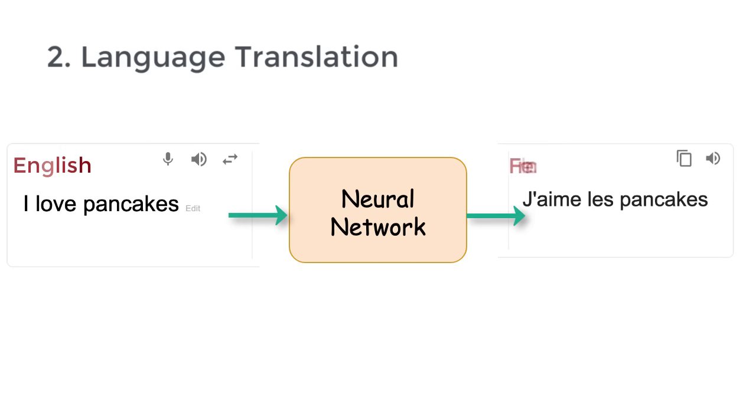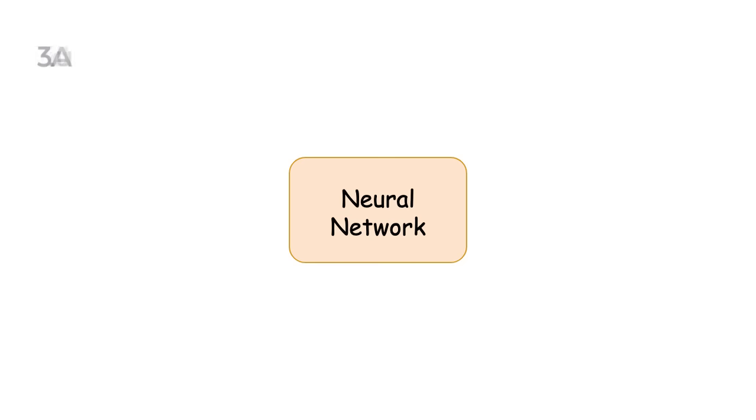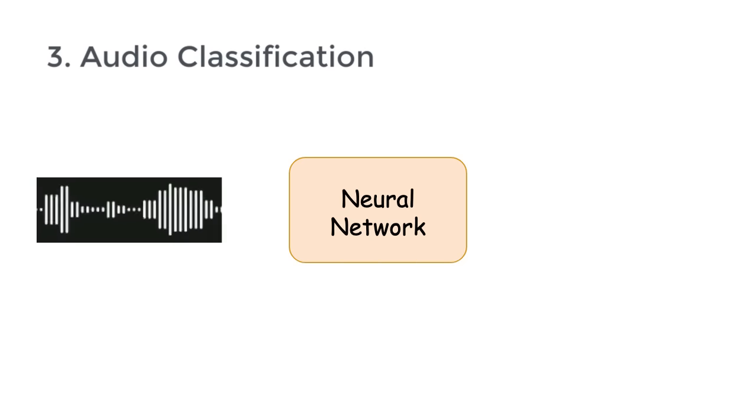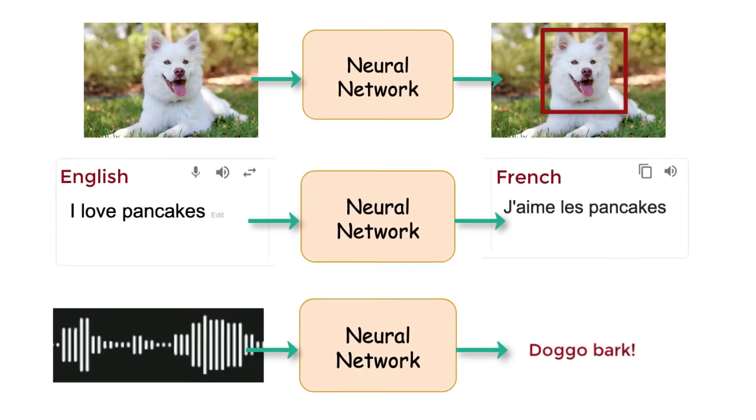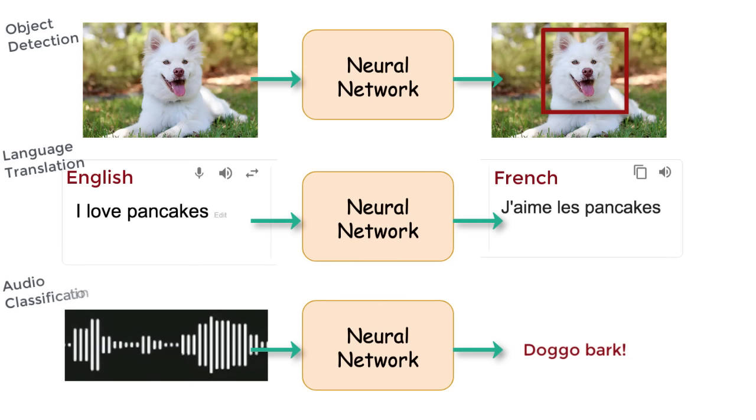Feed the network an image, and it will be able to identify locations of important objects in that image. Another problem we can solve is language translation. Feed a neural network an English sentence, it'll spit out the equivalent in French. Another problem that we can solve is audio classification. Feed the neural network a sound wave, and it will determine the object that produced that sound.